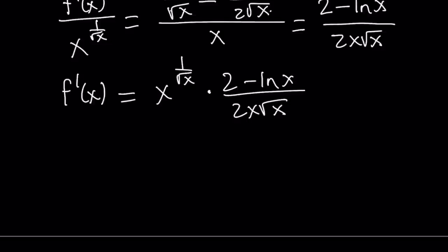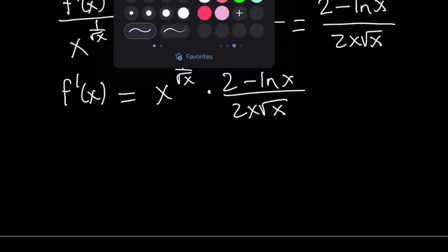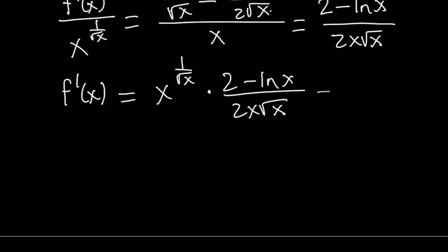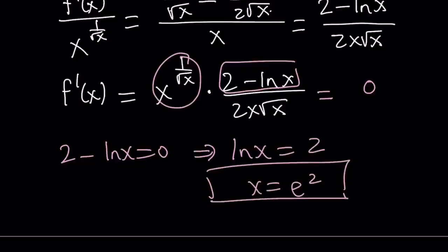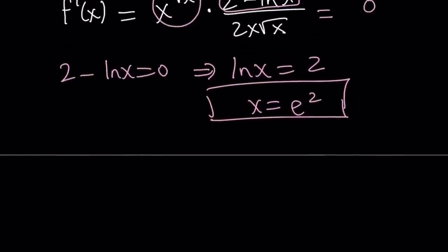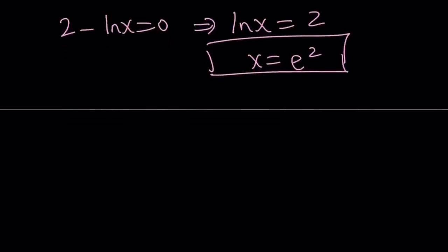So we have the derivative, which is important for understanding the behavior of the function. Let's set the derivative equal to zero to find critical points — these are where the derivative is zero or fails to exist, and they could be maxima, minima, inflection points, or vertical tangents. The factor (2x square root of x) can't be zero for positive x, so we set the numerator 2 minus ln x equal to zero: ln x equals 2, so x equals e squared. So we have a critical point at x equals e squared.